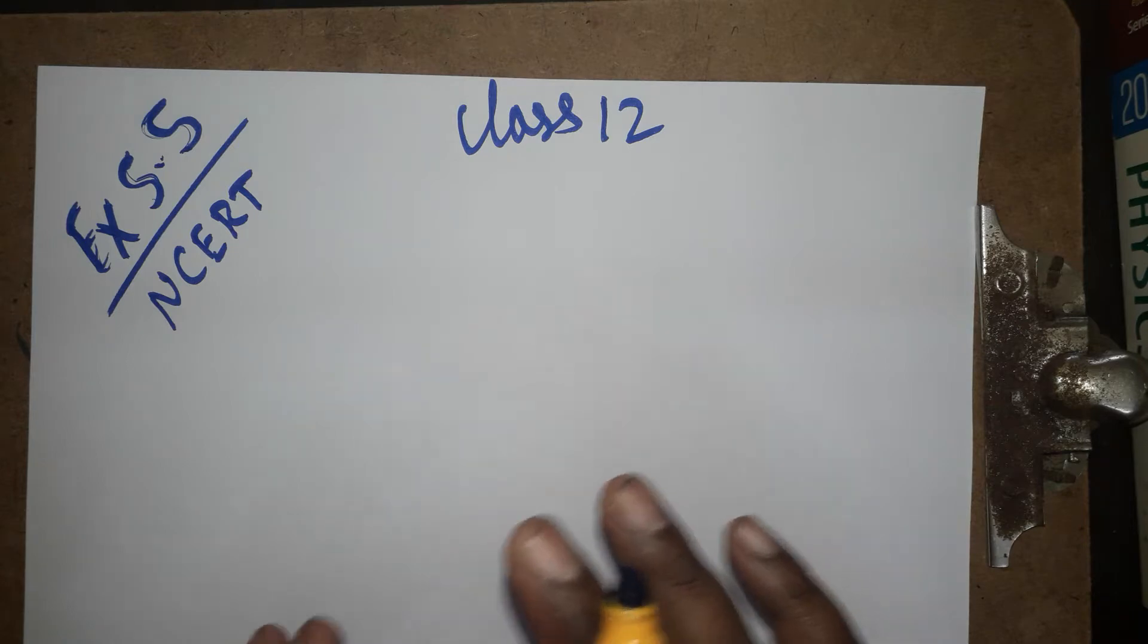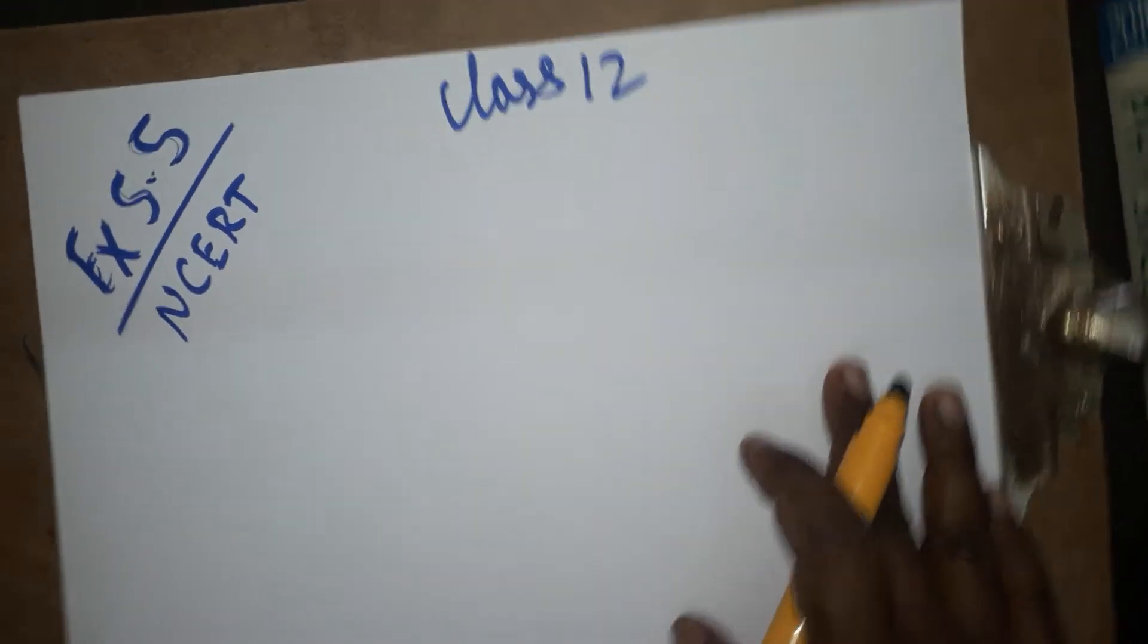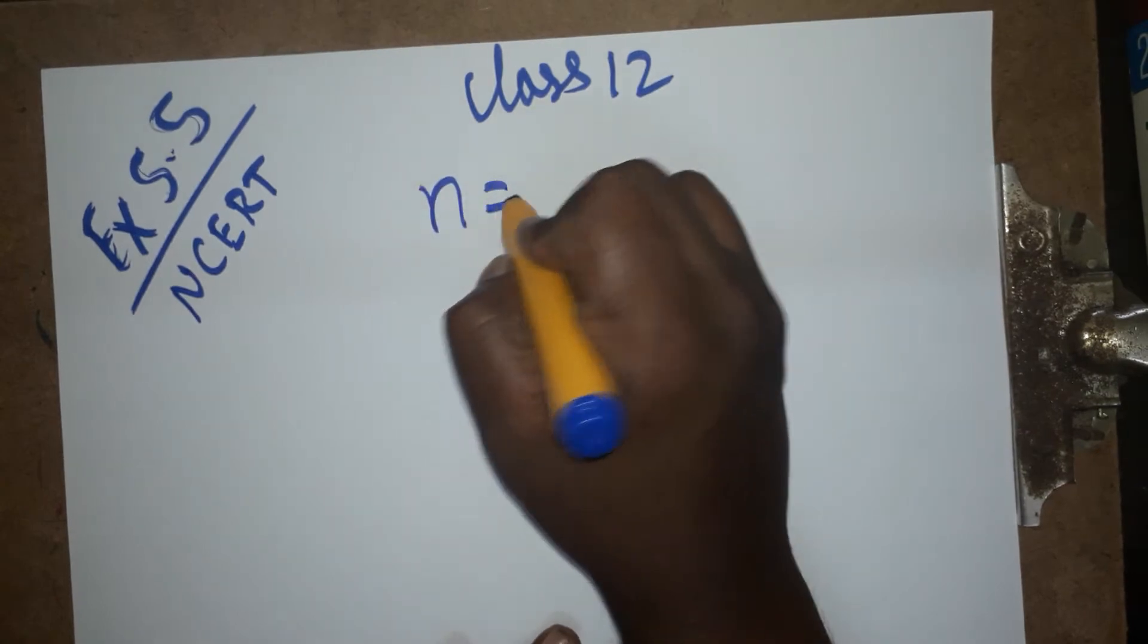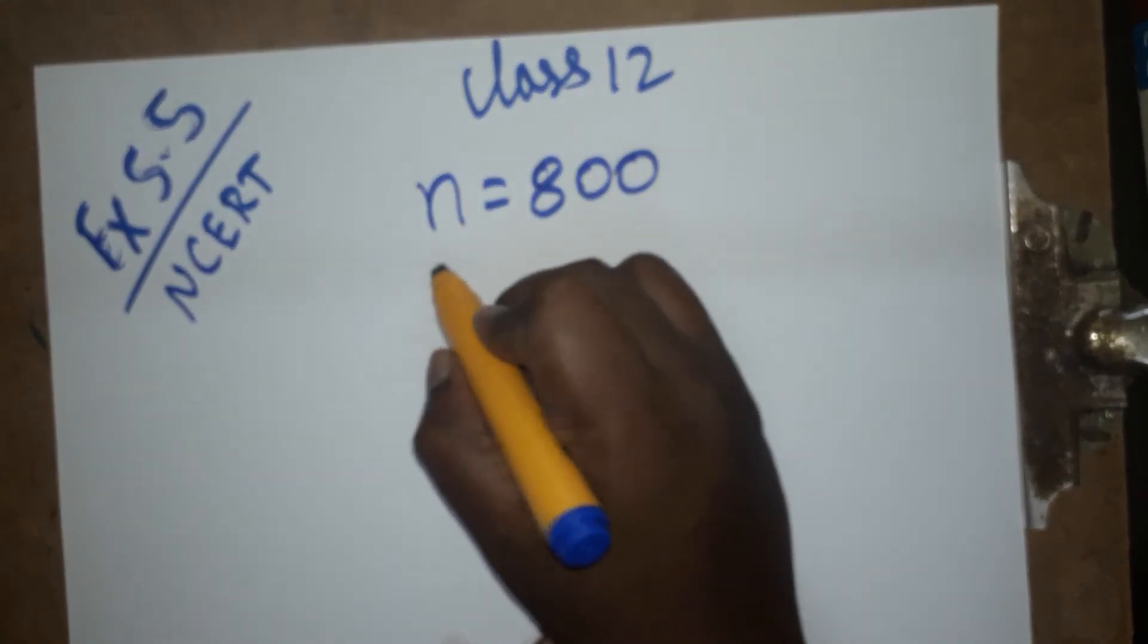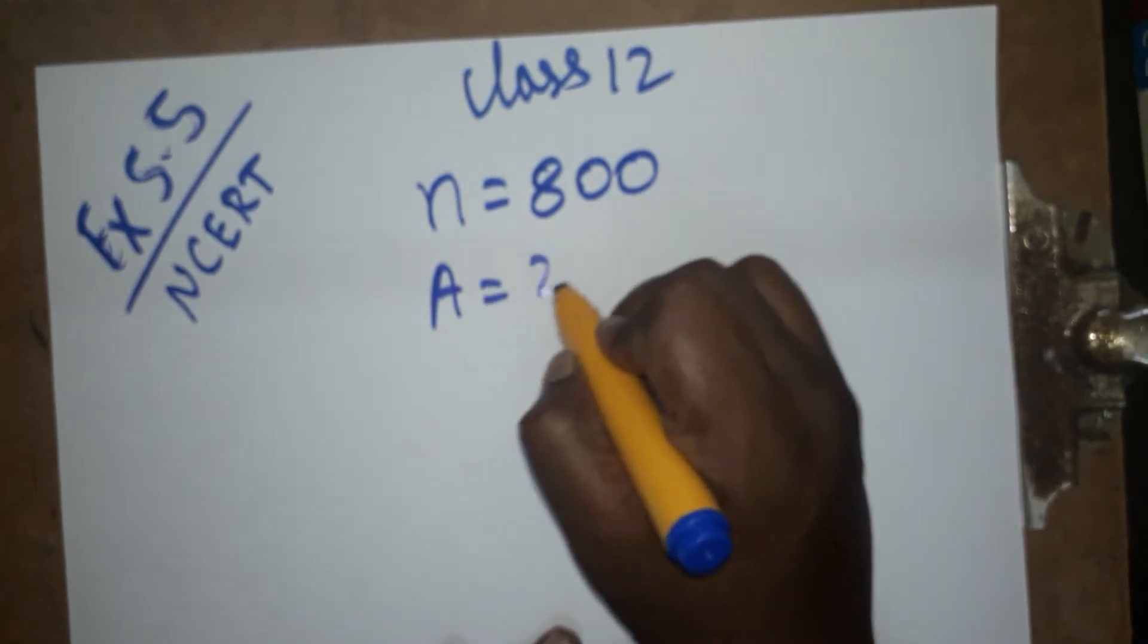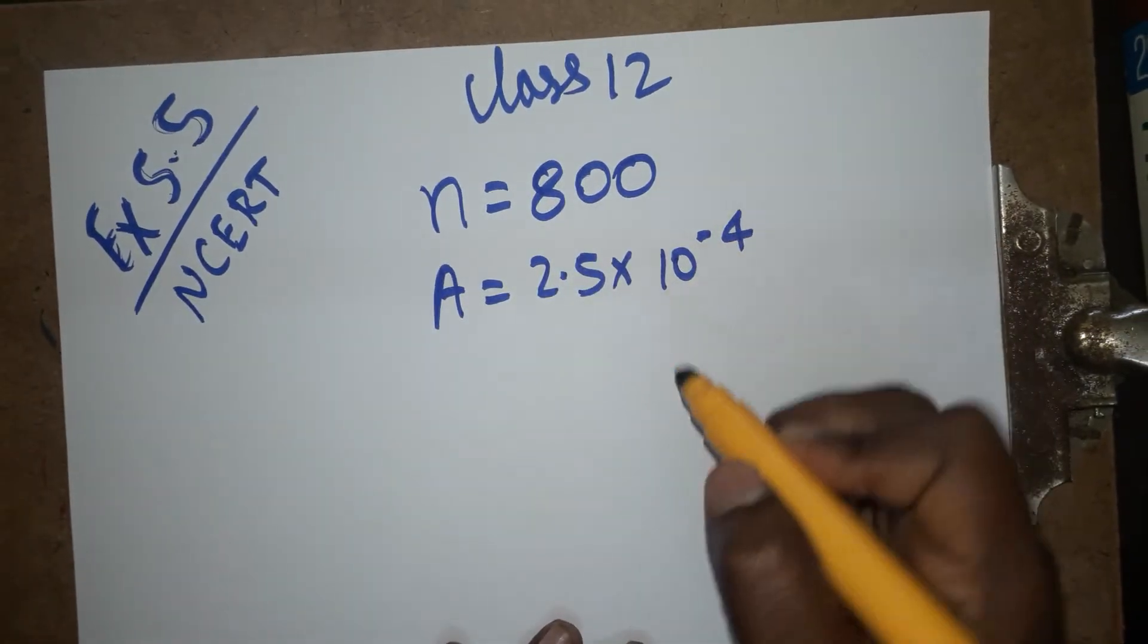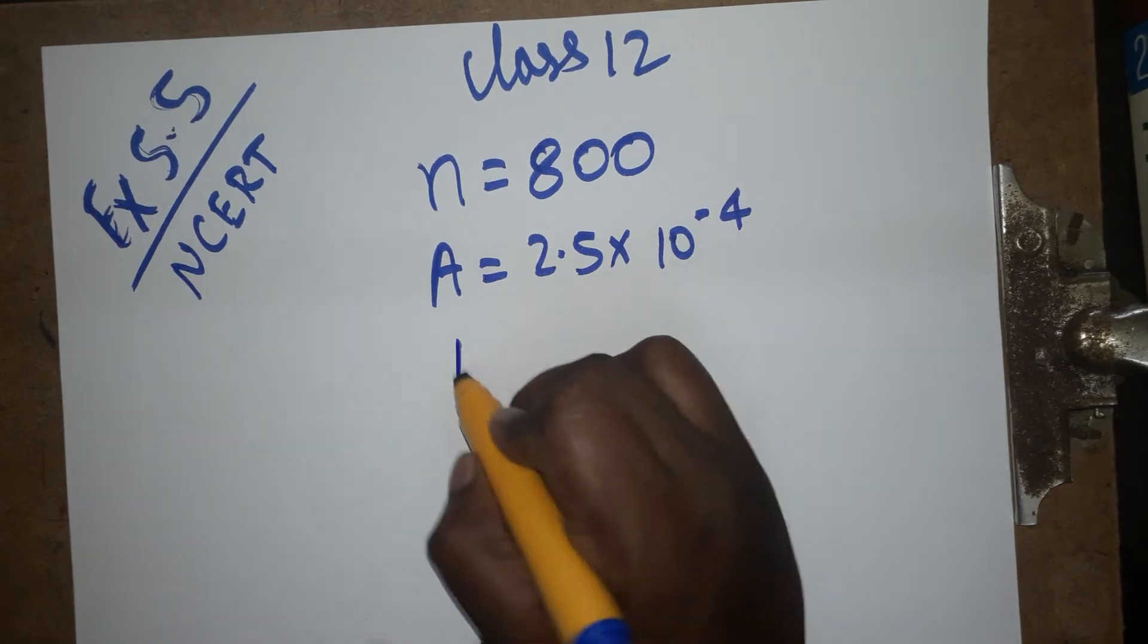I am given all the problems chapter-wise. Now we are going to discuss about this problem. The problem is given: number of turns is 800, the area is 2.5 into 10 power minus 4, and the current is going to be 3 ampere.